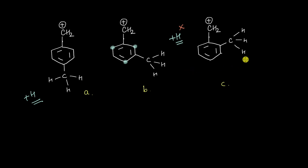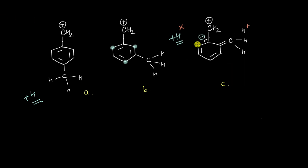Let us now look at what happens if we have a CH3 group at the ortho position. Even here we can have sigma-pi resonance, and if you keep moving these electrons through the resonating structures, you will see that lone pairs — negative charges — will get created at the ortho and para positions of the alkyl group. Even here, because we have an empty orbital right next to a lone pair, we can have pi bond formation.